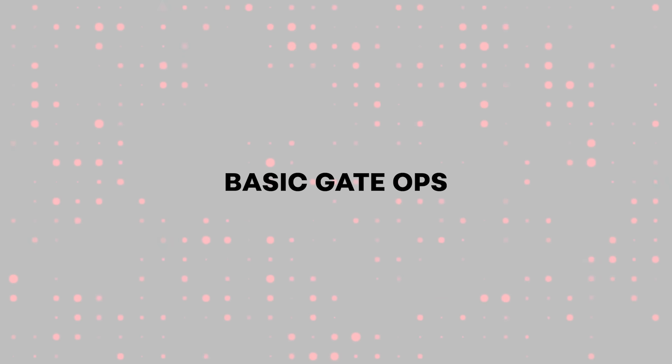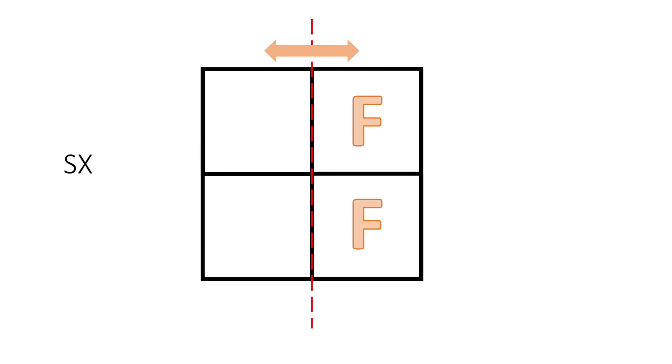Basic gate operations: here we'll define three basic operations on our spaces. Sx, Sy, and Sz. Here they are. Sx inverts the right-hand two bits, and then flips the square over the vertical axis. Sy does a similar thing, inverting the bottom bits and flipping across the other axis. Sz rotates the four bits around.